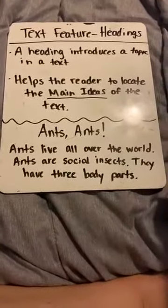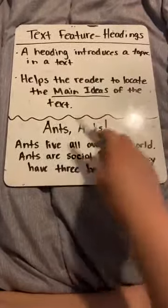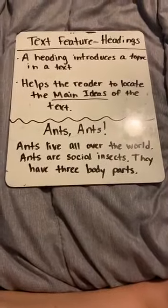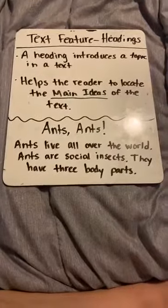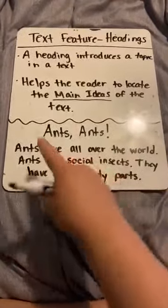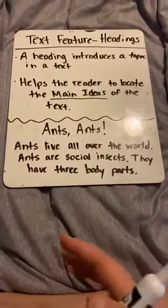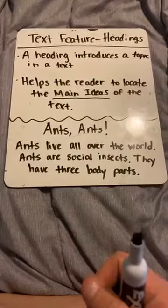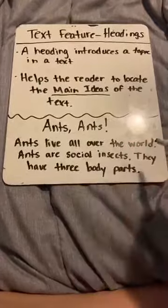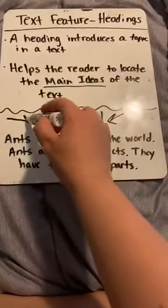So here I have a sample of a story for you. It's just a short little story. It says ANTS — ANTS LIVE ALL OVER THE WORLD. ANTS ARE SOCIAL INSECTS. THEY HAVE THREE BODY PARTS. Now, in this little passage that I wrote, where would be my heading? What is going to tell me the topic? You're right — it's going to be right here. This is going to be my heading.